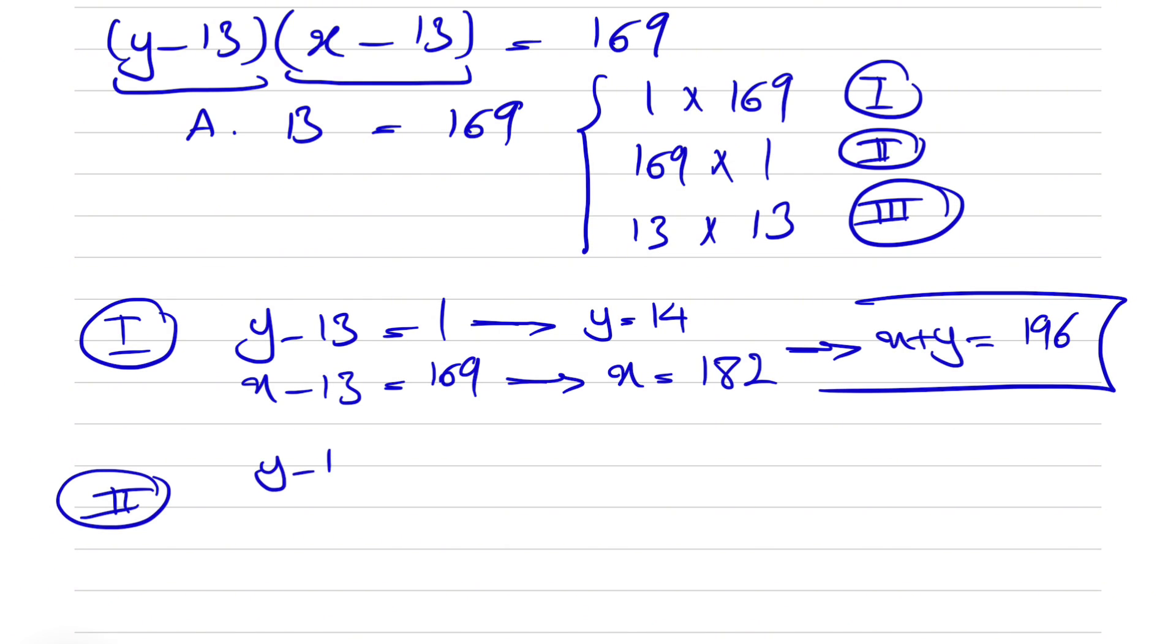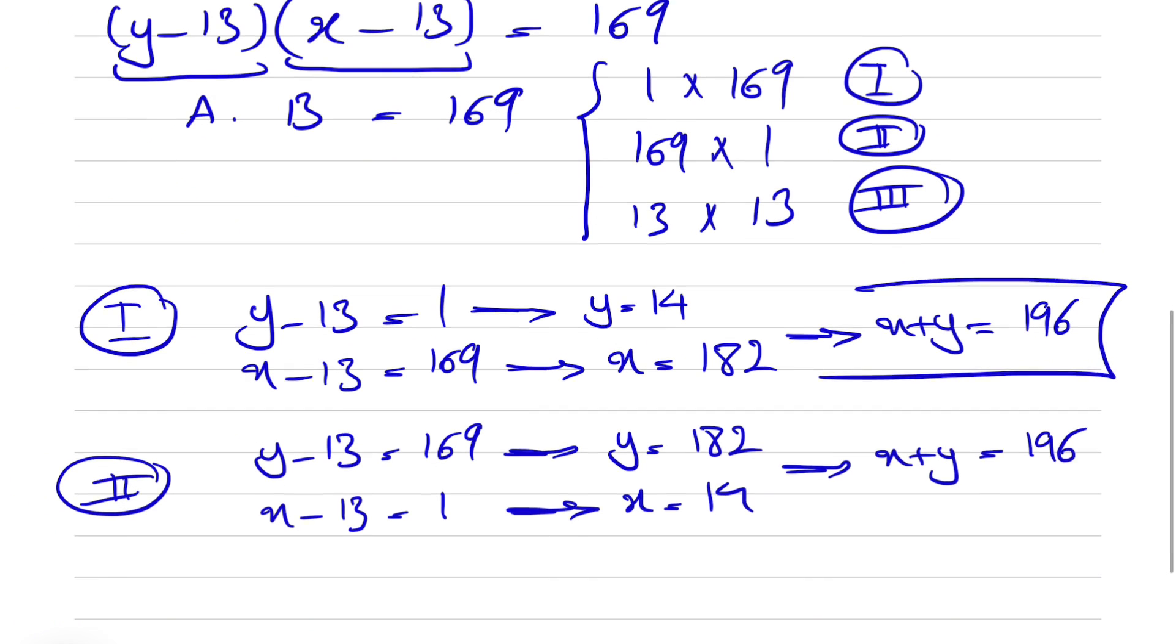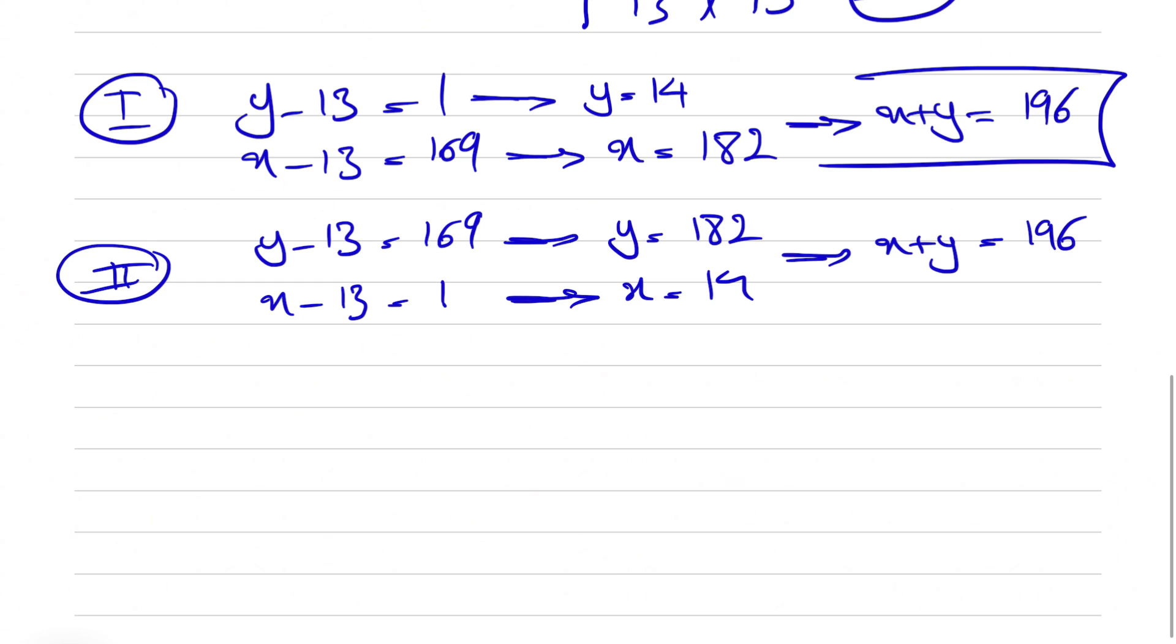So the second scenario, our y minus 13 will be 169, our x minus 13 will be 1. So y will be what we got for x in the previous one. So y will be 182, and x will be 1 plus 13 or 14. So basically we get the same answer as previous step 196. So nothing new here.